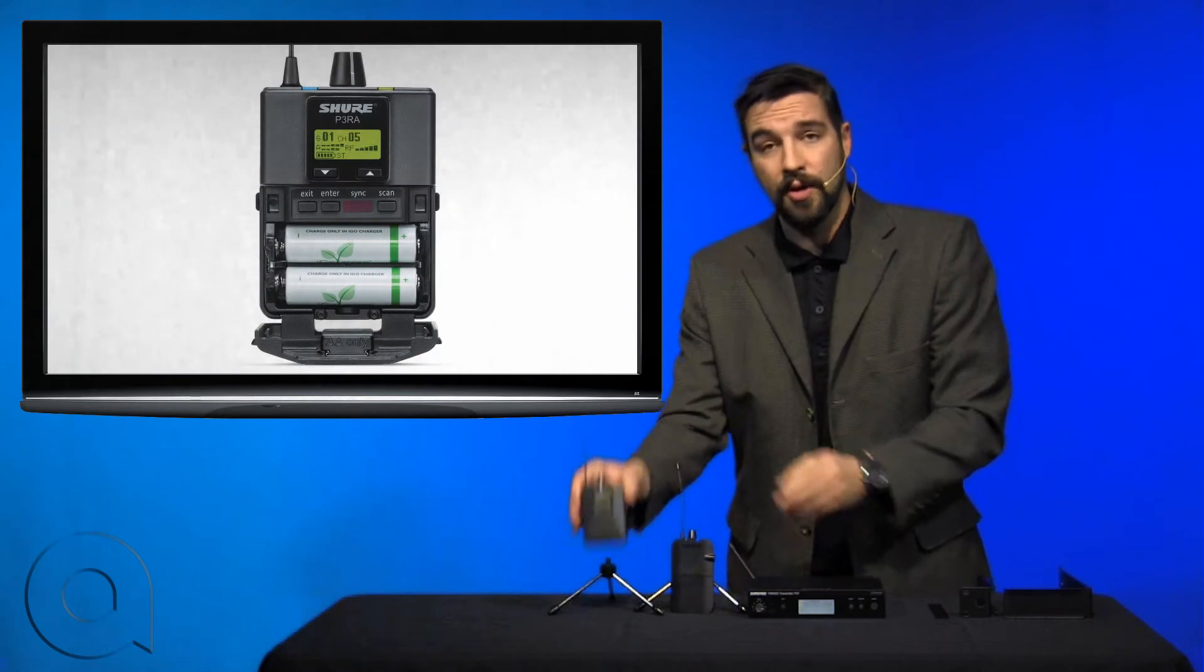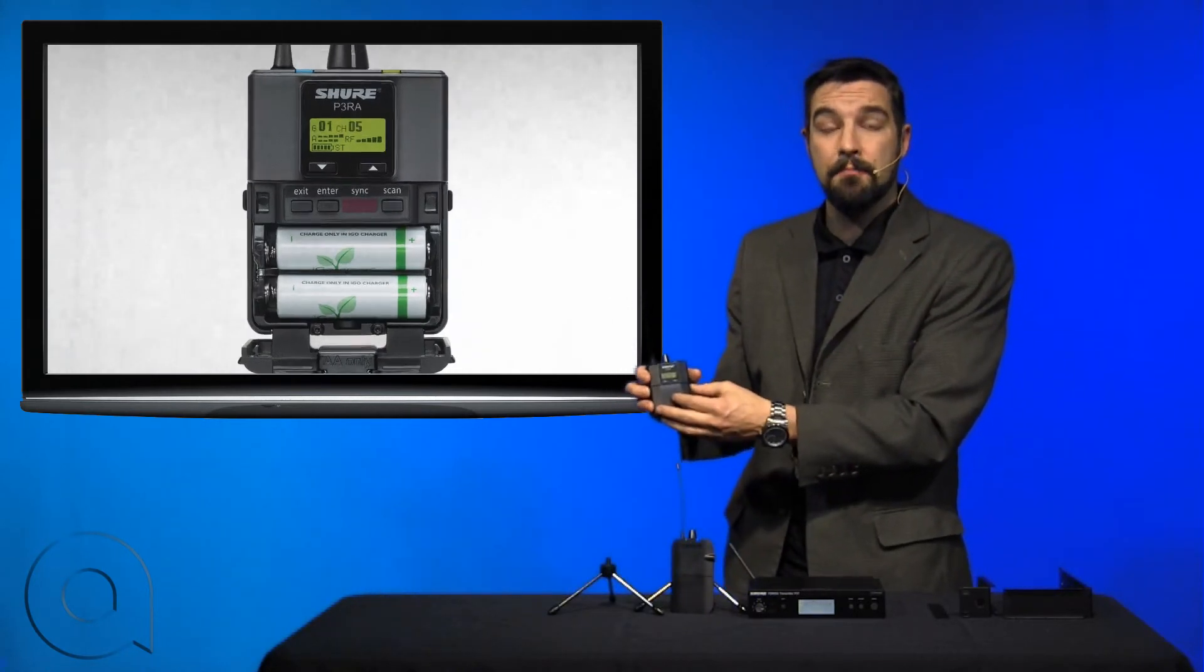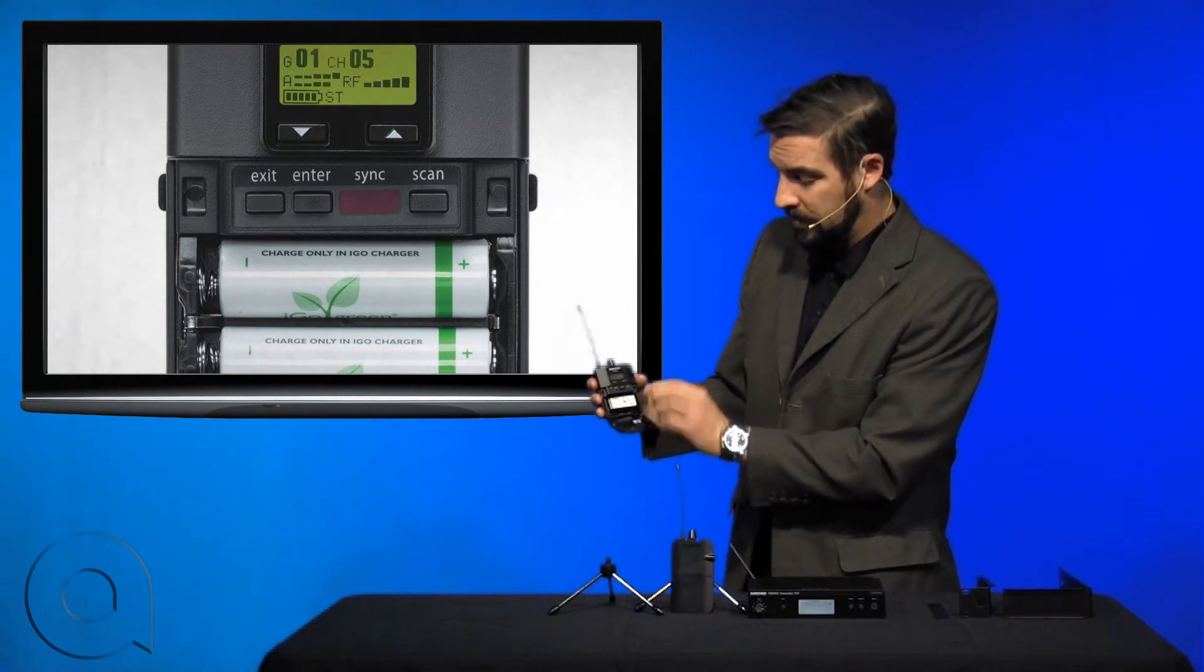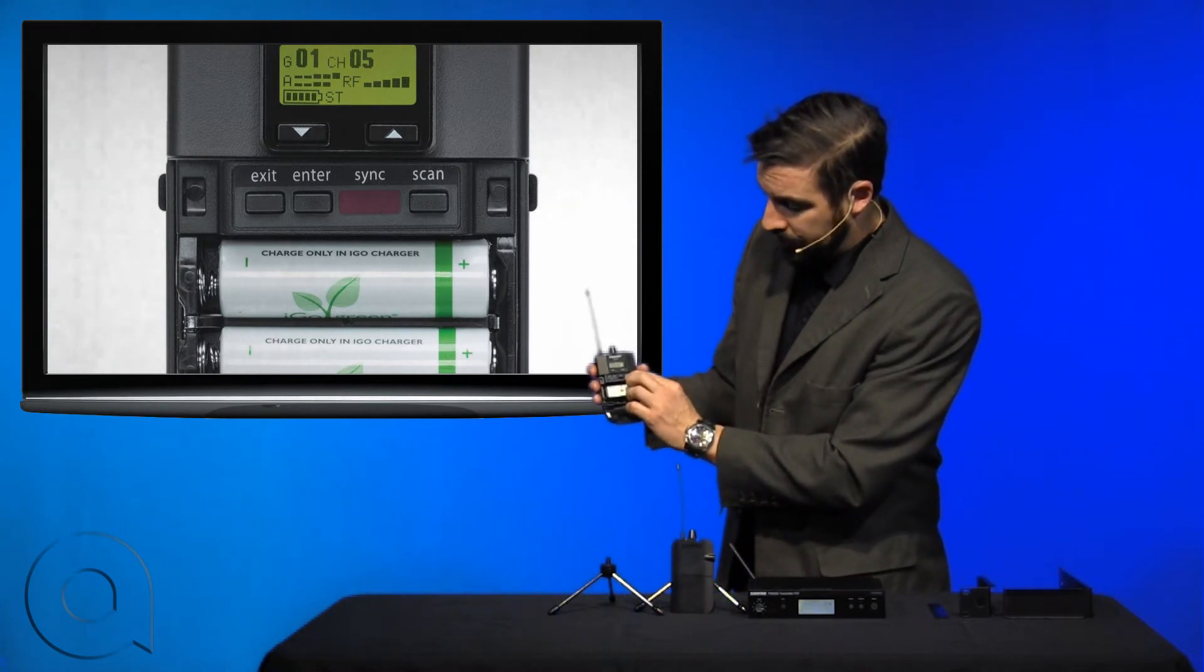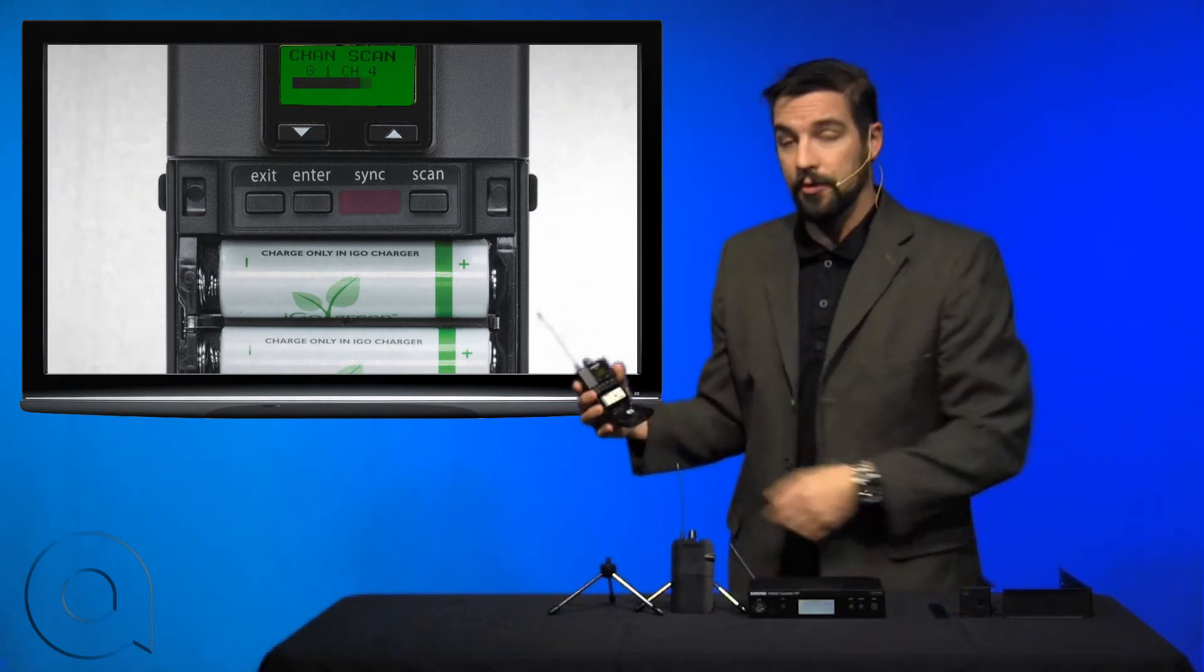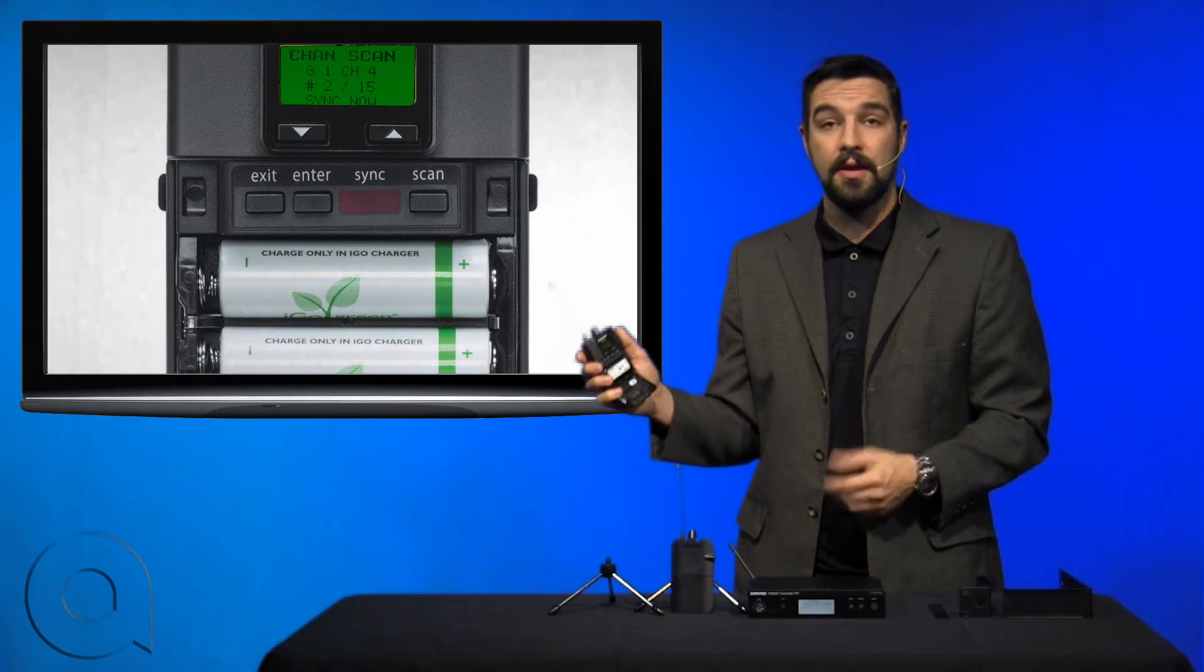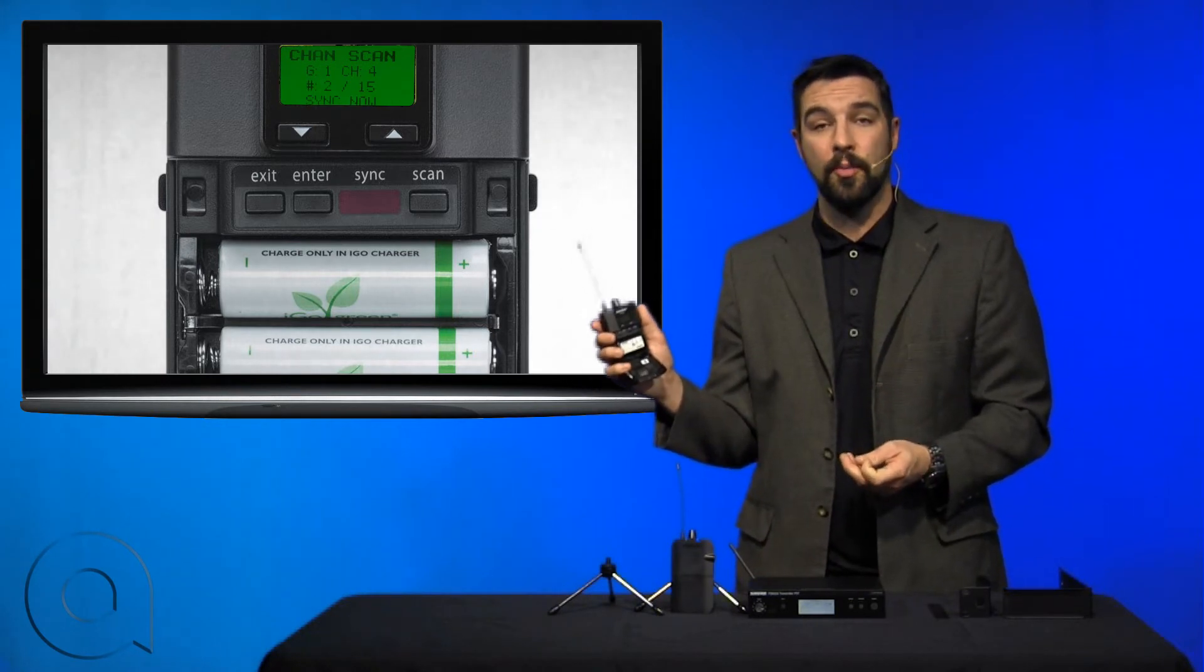It's a very similar process on the P3RA which is the advanced metal belt pack version of the receiver. Simply open it up, hold down the scan button and it's going to go through and in a similar fashion scan all of the groups and channels until it finds an appropriate and open channel.